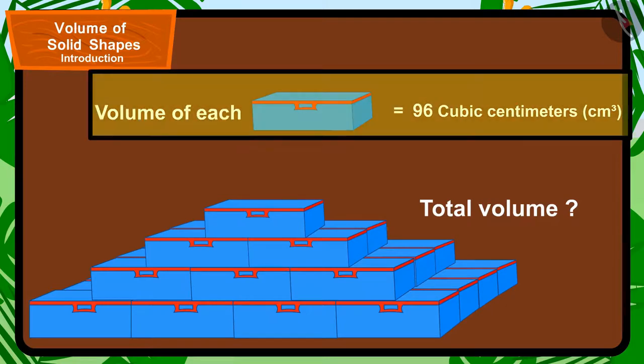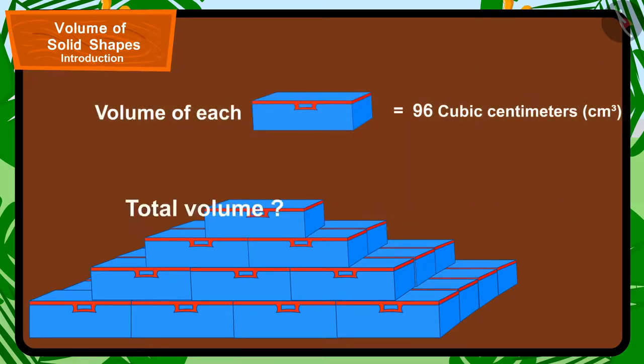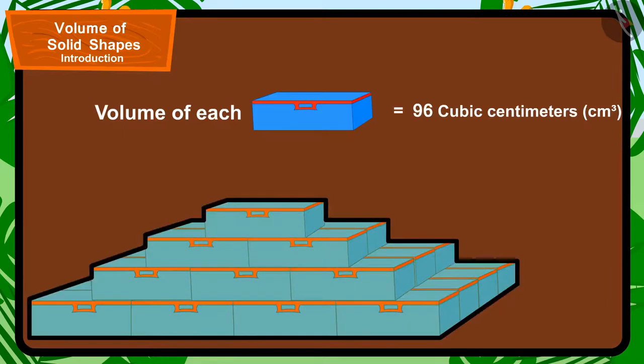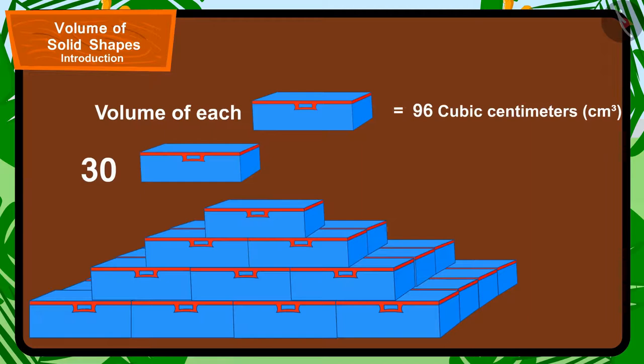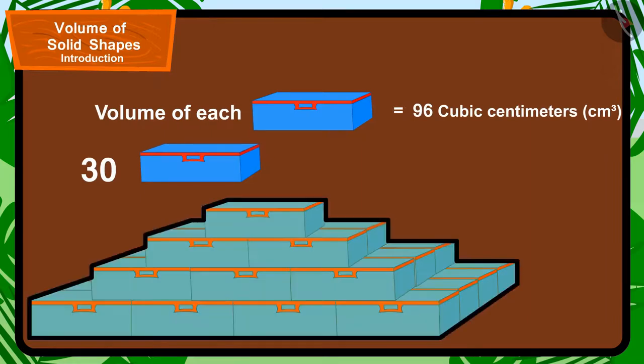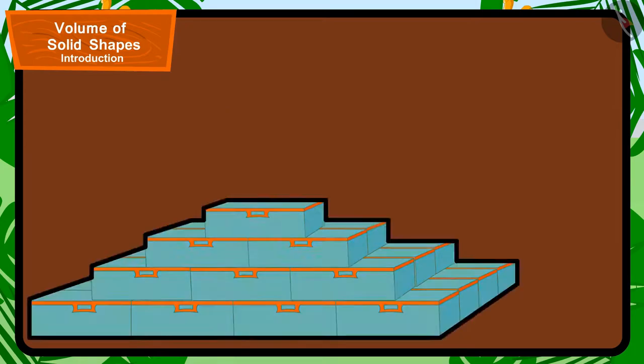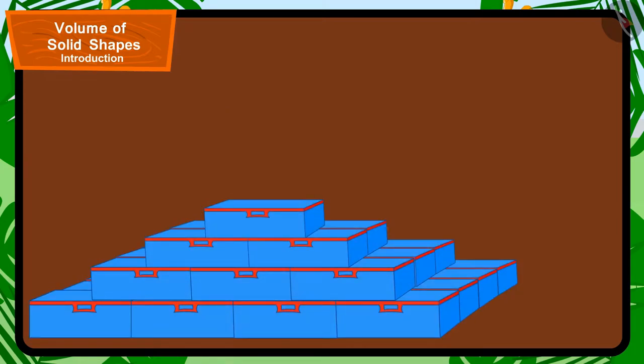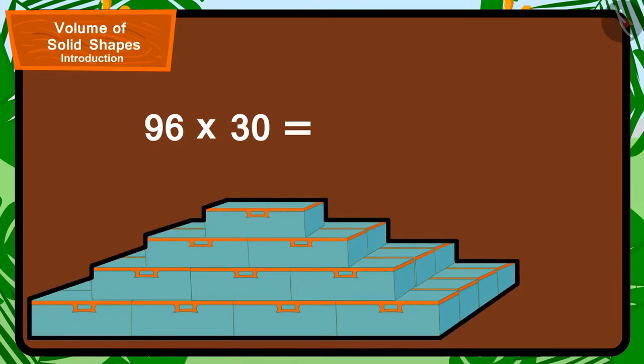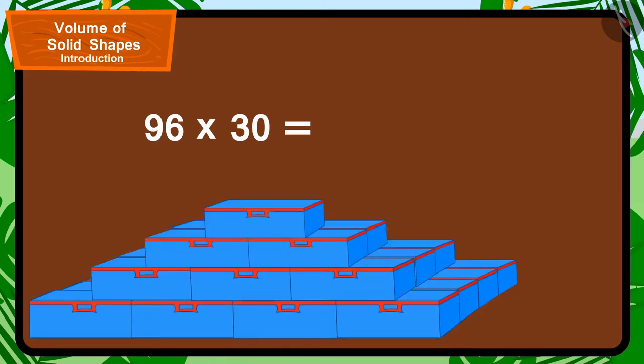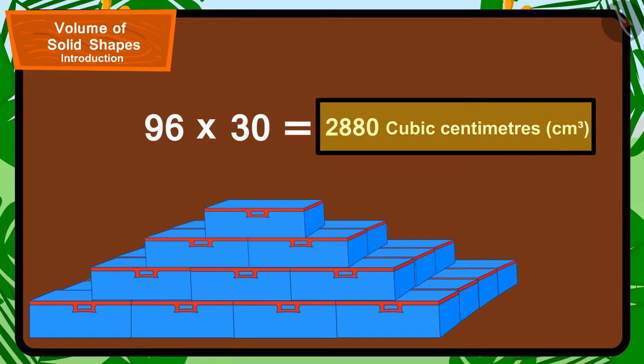The volume of a compass box is equal to 96 cm³ and Babban has used a total of 30 compass boxes in this shape. To find the volume of the total number of compass boxes being used in this shape created by Babban, we will have to multiply the volume of one compass box by the number of total compass boxes. In this way, the volume of all compass boxes being used in this shape made by Babban will be 96 by 30, 2880 cm³.